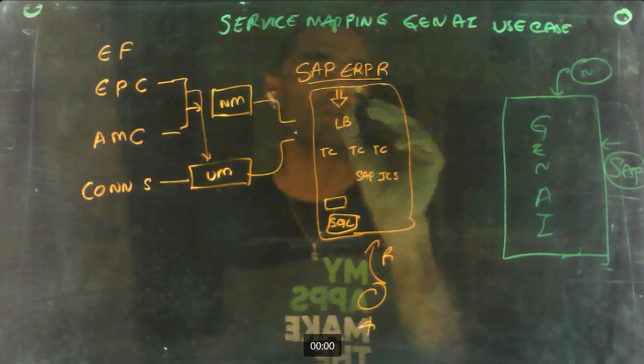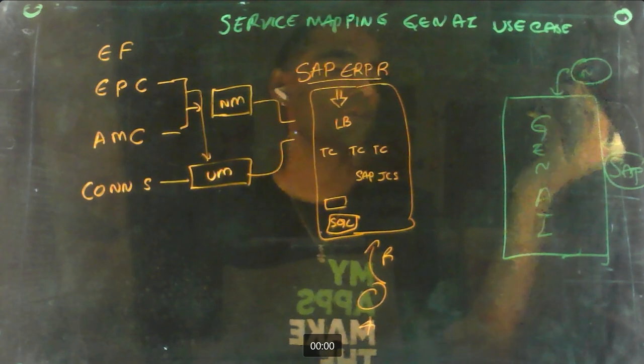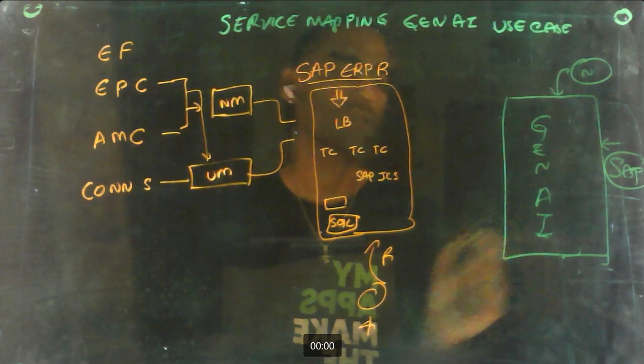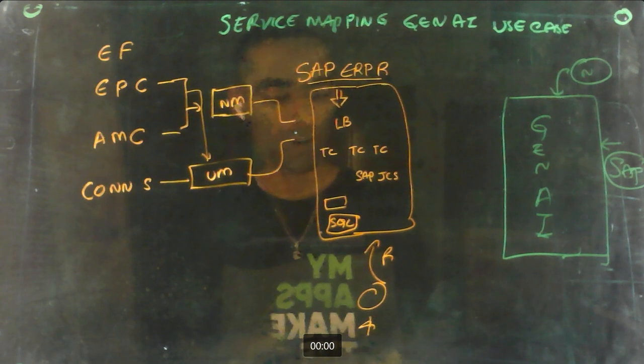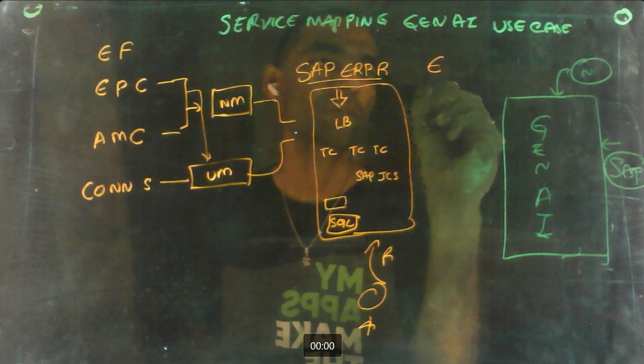And then ServiceNow is a platform, so together if they combine and provide a generative AI solution which will give you what I call as an expected map. So expected map, what that means is for a given SAP ERP implementation, how a general production service map would look like.